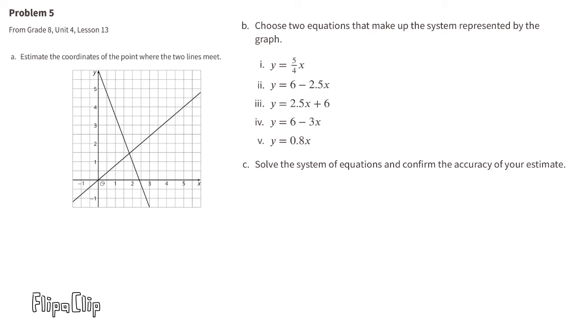B. Choose two equations that make up the system represented by the graph. It looks to me like the Y-intercept is at the origin, so the Y-intercept would be 0. So we need to find an equation that would have the Y-intercept as 0. And it looks to me like the slope is up 4 and to the right 5. So that would be a rise over run of 4 over 5, which is the same thing as a slope of 8 tenths. So let's look at equation 5. Y equals 8 tenths X. And then if we added a plus 0, that would be the Y-intercept. So I would go with equation 5.